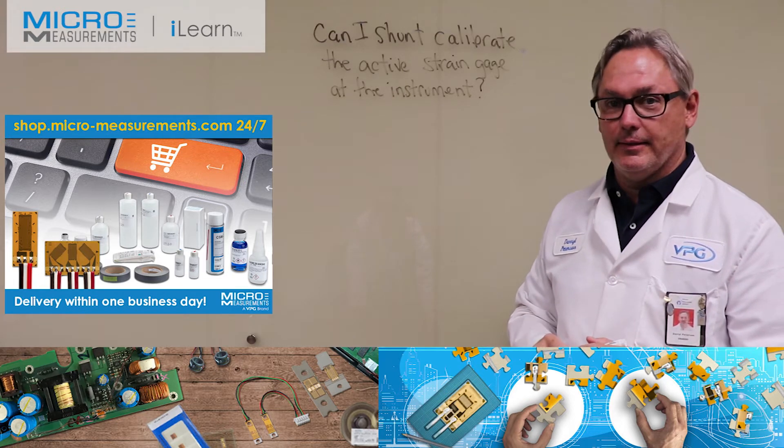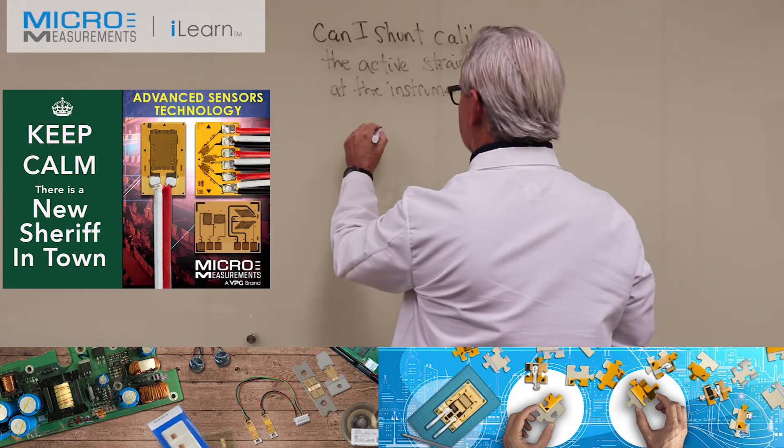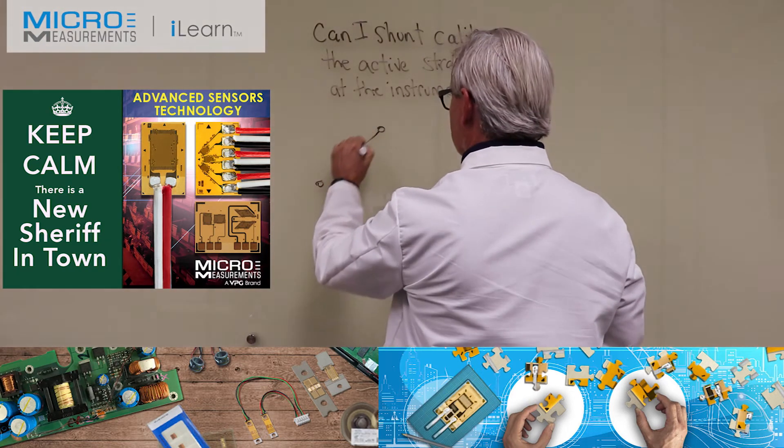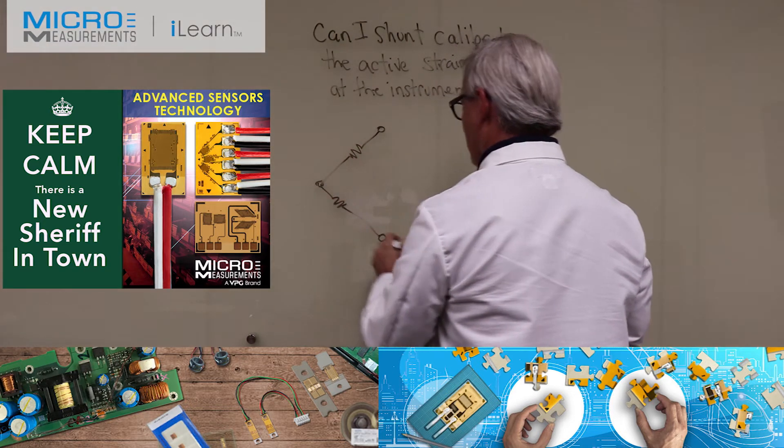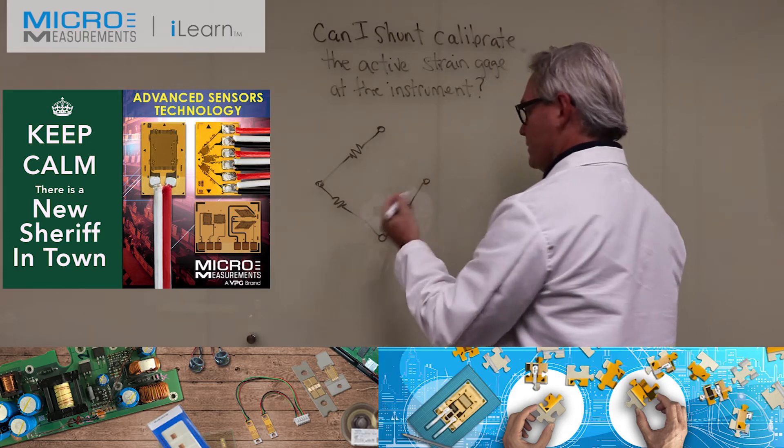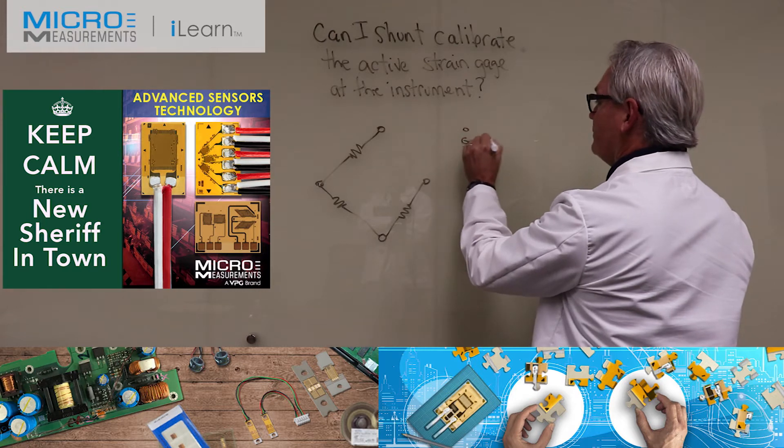Some customers want to provide that calibration but do it back over at the instrument. I want to take a few minutes and talk about whether or not that's a good idea. To get started, I'm going to draw a Wheatstone bridge. I'll draw the corners of the bridge, so we've got our resistors here.